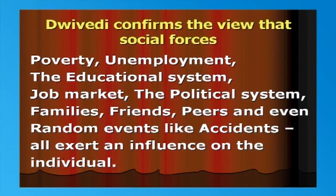Yet some criminologists have related crime with levels of poverty and unemployment. Draivari confirms this view that social forces like poverty and unemployment, the educational system, job market, the political system, families, friends, peers, and even random events like accidents all exert an influence on the individual. He further states: we must bear in mind that a society that successfully keeps 80 to 90 percent of its population on the right side of the law may find that it needs other measures to deter the remaining 10 to 20 percent. Emile Durkheim is of the opinion that crimes are the inevitable result of the interactions of various social forces.